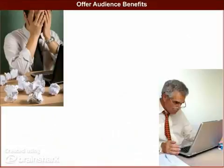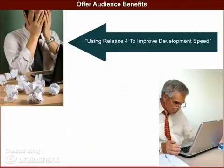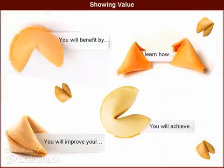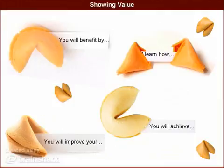What are some of the things that offer perceived value to your viewers? If you're trying to reach developers, you might appeal to their frustrations with workload and deadlines — perhaps 'Using Release 4 to Improve Development Speed.' If you're targeting managers and purchasing decision makers, you might address their concerns about costs and reliability — for instance, 'Improving Your Bottom Line with Release 4.' The value to your audience should be made explicit at every step of the process, from event titles to invitations, event information pages, promotional activities, and presentation content.